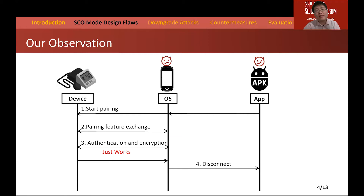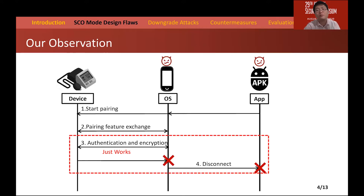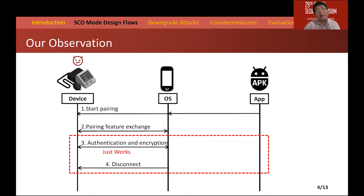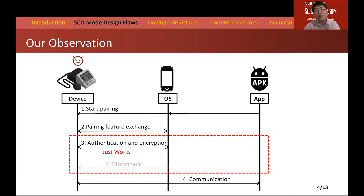Our observation is that, according to the BLE specification, the SCO mode is only enforced at the device side which provides the services, but it is not enforced at the initiator side which consumes the data services. As a result, multiple flaws can be derived. With Secure Connection Only mode enabled, the device requires Passkey Entry or Numeric Comparison to authenticate the mobile, and should reject an insecure connection initiated by a malicious mobile. But this mode is not enforced for mobile, so the mobile is not enforced to authenticate the device, meaning the mobile can accept an insecure pairing method initiated by a malicious device.